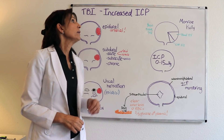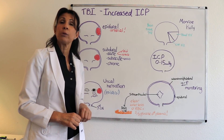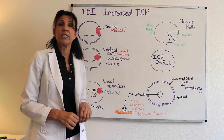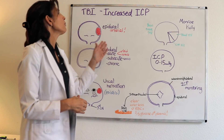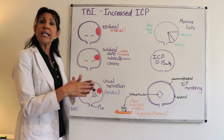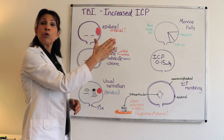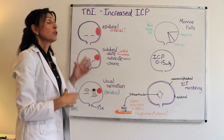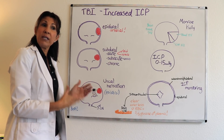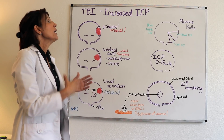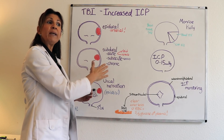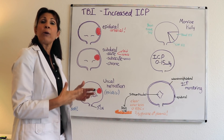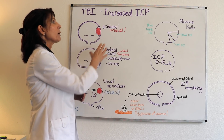This video will cover increased intracranial pressure, starting with pathophysiology and then moving to assessment and interventions. From outer to inner, the meninges go dura, arachnoid, and pia. Understanding these layers is important when discussing traumatic brain injuries, their mechanism of injury, and pathophysiology, because it helps you understand the location of the injury and how it's categorized.